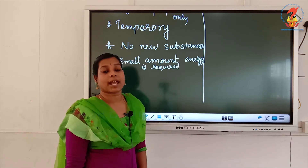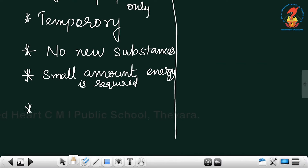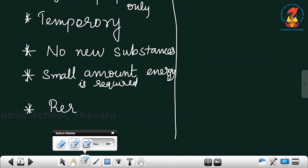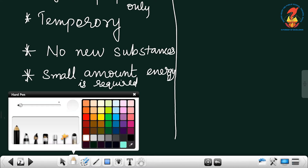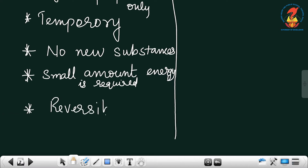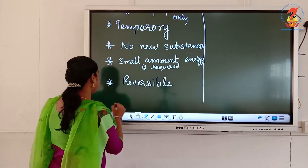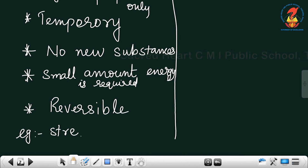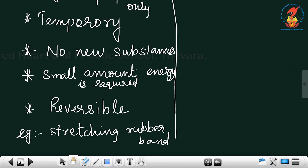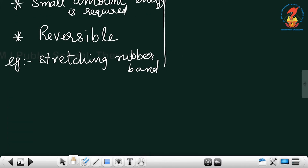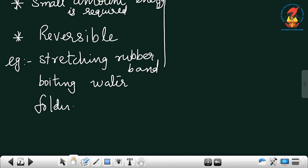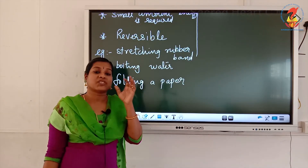Sometimes energy will be absorbed, sometimes energy will be liberated. And one more point: physical changes are reversible. We can bring it back to its original form. Examples include stretching a rubber band, boiling water, and folding paper — all these are different examples of physical changes.